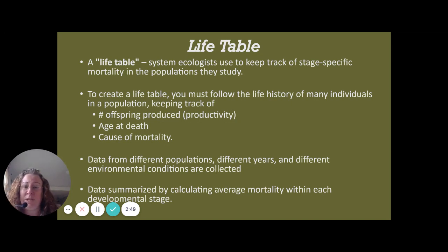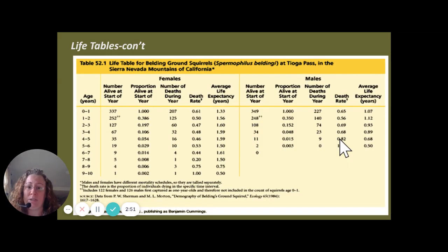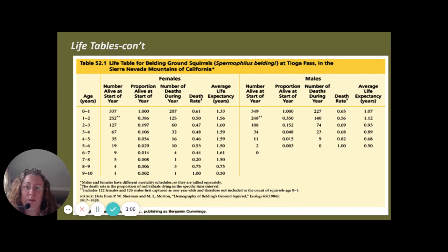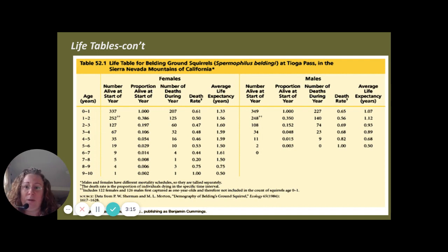We calculate all of that data and put it into a table, as shown on this slide. You can see we have recognized various ages and determined by gender how many are present, how long they live, and what their death rate is. This particular table is looking at a ground squirrel studied in Nevada.